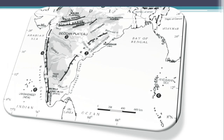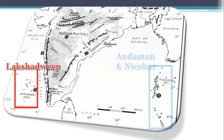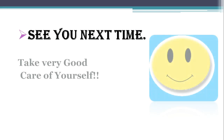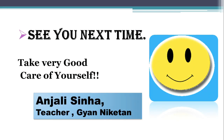Look at the map. Lakshadweep lies on the western side of the Malabar coast, and Andaman Nicobar lies on the eastern side of the Coromandel coast. See you next time. Take very good care of yourself. Thank you.